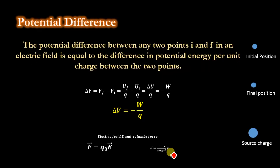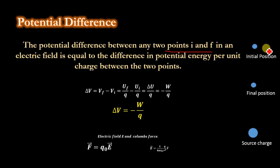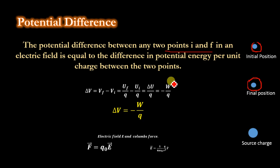Now, what is potential difference? The potential difference between any two points — I the initial point and F the final position — in an electric field is equal to the difference in potential energy per unit charge between the two points. In potential difference, the initial point is not considered as infinite; it is considered as a finite point. So the potential at the initial point is V_I and the potential at the final point is V_F, and the potential difference is delta V equals V_F minus V_I.